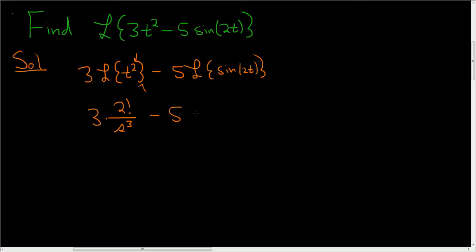Minus 5 times, now there's a 2 here, so you put a 2 here, and then it's s squared plus 2 squared. Let's back up, and let's talk about the formulas.